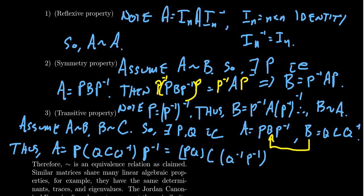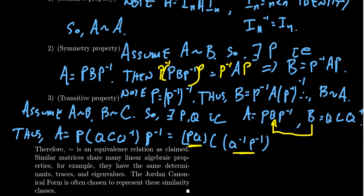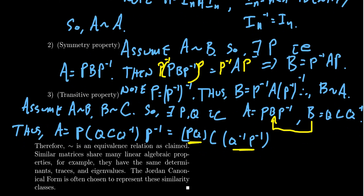This looks like we're going in the right direction. Maybe our non-singular matrix that relates C to A is P Q. But what about this right here — Q inverse P inverse? The thing with inverse operations is that if you put your socks on, then your shoes, then you take your shoes off, then your socks — the order in which you undo the operations is backwards.